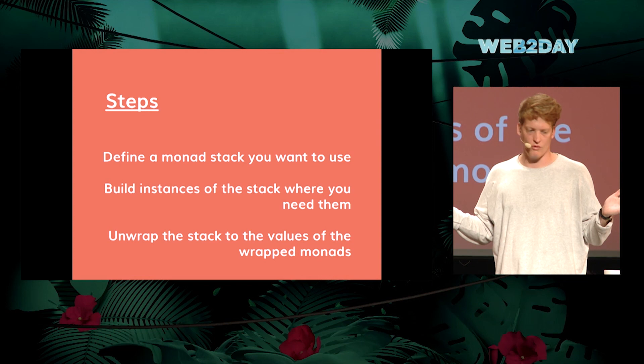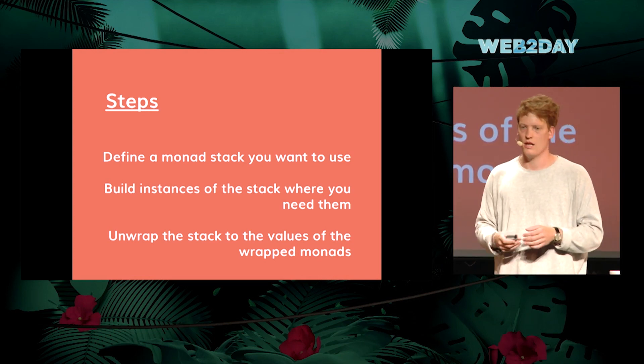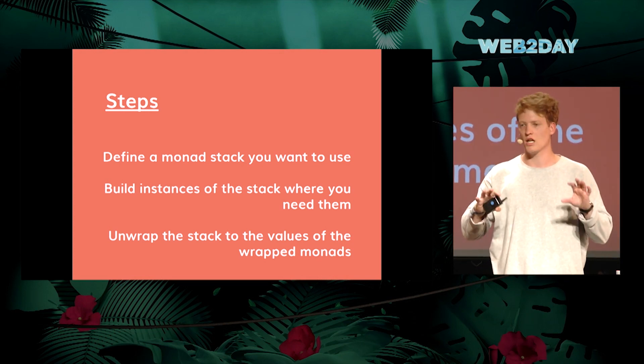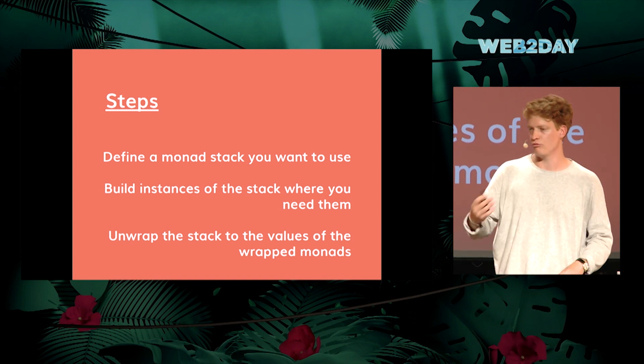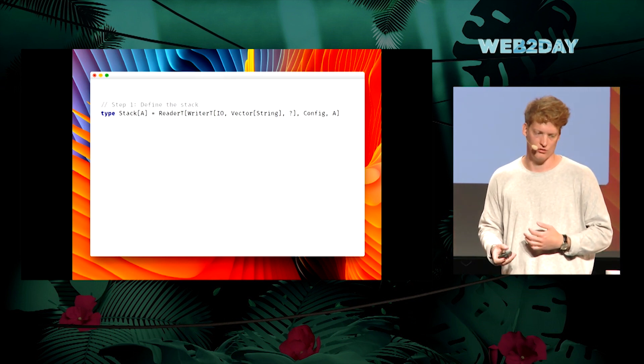When you use Monad Transformers in your programs, there are kind of three steps. First, you look at the program and the different capabilities you want — do you want to do IO? Do you want optional values? Do you want to deal with failures? Then you write a stack that encompasses these Monads, and then in all of your values you build instances of this stack, and when you run it you unwrap it again. I'll show some examples of how you'd use it.